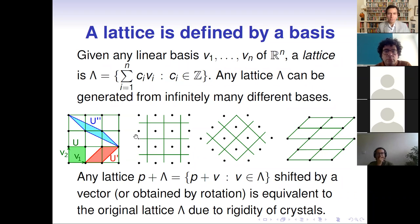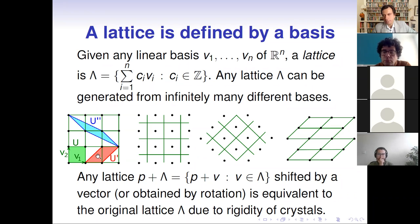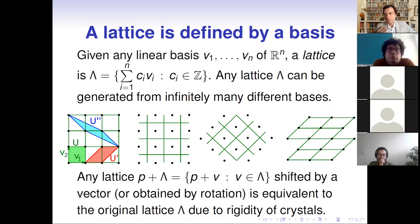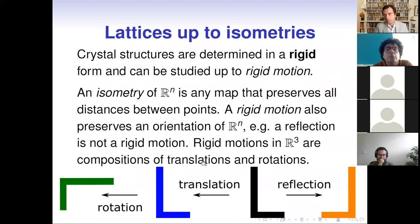As you can see from this hopefully familiar picture, the same lattice can be generated by many different bases, even if you try to choose a basis in a minimal way so that the unit cell spanned by the basis has minimum volume. Even in this case we have flexibility to shift our points by a vector or even rotate the lattice, getting a different basis generating essentially the same lattice.